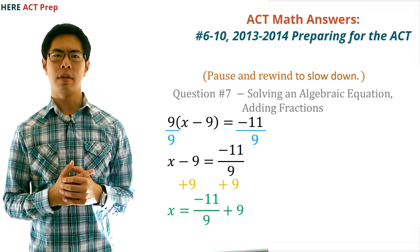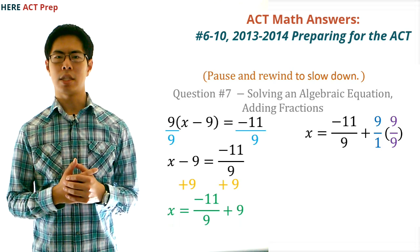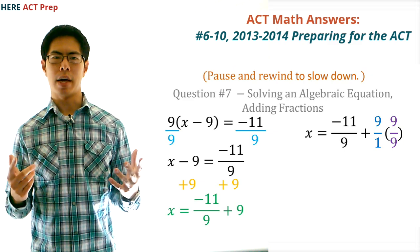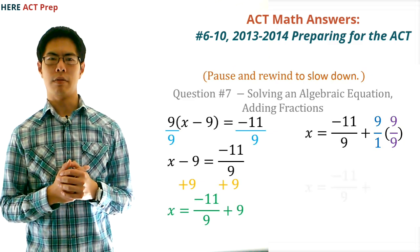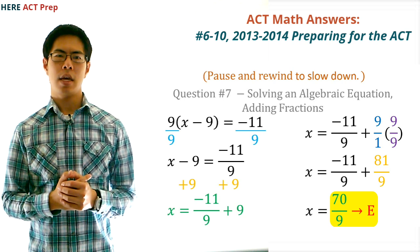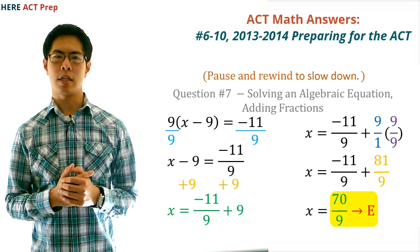To add negative 11 divided by 9 plus 9, we want a common denominator. So 9 is going to be the same thing as 9 over 1. And to get 9 in the denominator, we multiply both top and bottom by 9, which gives us 81 over 9. Finally, we add negative 11 over 9 and 81 over 9 to get 70 over 9. So E is the correct answer.